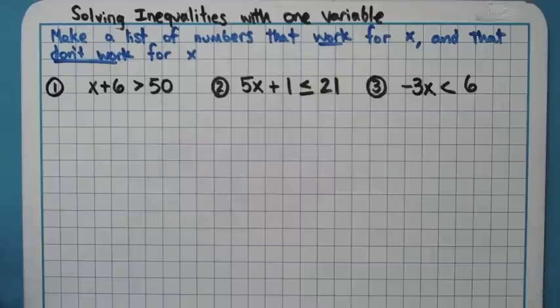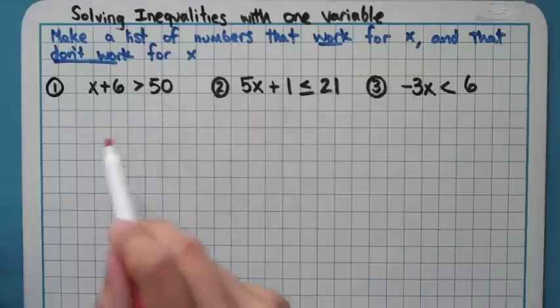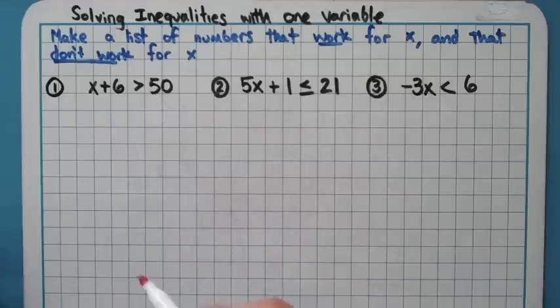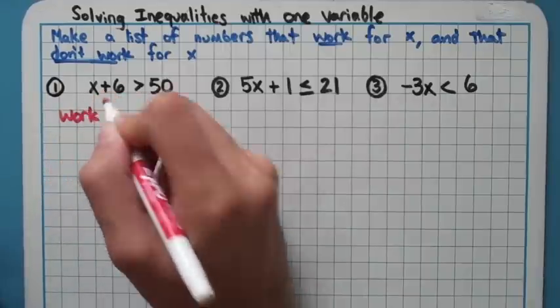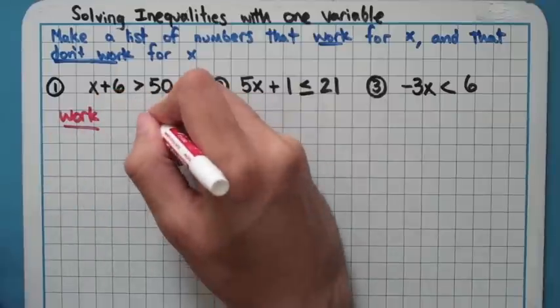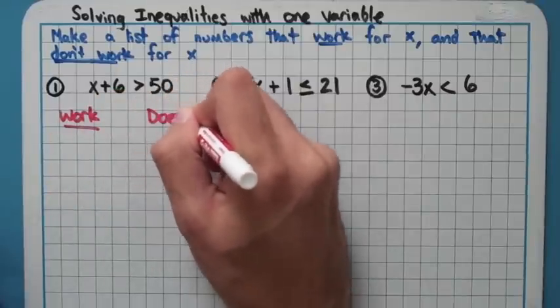Before we get into that though, I have a little guess and check activity I want you to try with these three problems here to kind of bring home a point about a new rule we're going to have. What I want you to do for each of these three problems is think about numbers that work when you plug them in for x, and numbers that don't work.